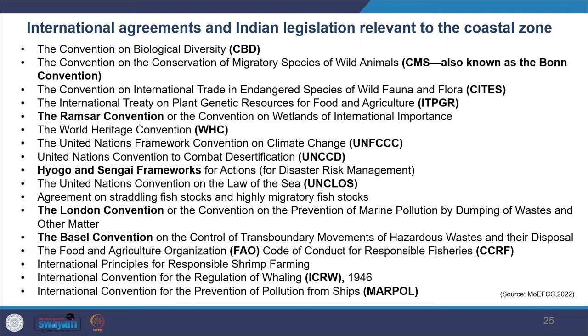Further agreements include the agreement on straddling fish stocks and highly migratory fish stocks, the London Convention on Prevention of Marine Pollution by Dumping of Wastes, the Basel Convention, the FAO Code of Conduct for Responsible Fisheries, International Principles for Responsible Shrimp Farming, the International Convention for the Regulation of Whaling, and MARPOL — the International Convention for the Prevention of Pollution from Ships. Much of this international legislation applies to both inland and coastal waters and many are highly relevant to the coastal zone.